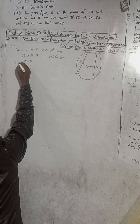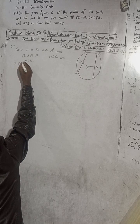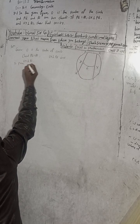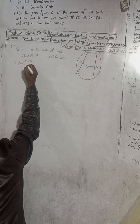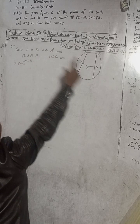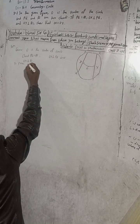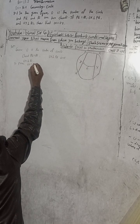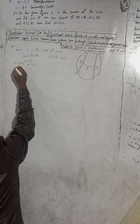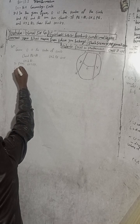To prove: OX is equal to OY. And our construction is here.